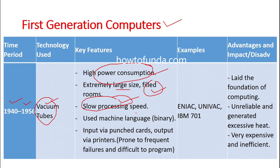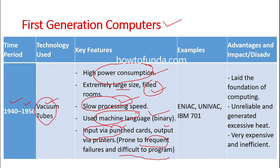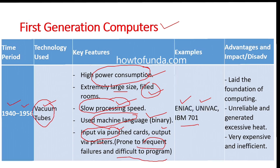These computers would completely fill bigger rooms, and the processing speed is very slow. First generation computers make use of machine language, which is binary — either 0 or 1. All inputs are accepted via punched cards and output via printers. There were frequent failures and it was very difficult to program. Some examples are ENIAC, UNIVAC, and IBM 701.